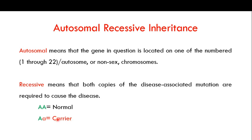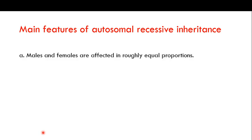Carriers are not called diseased; they are called carriers for that particular genetic disorder. The only time an individual will express an autosomal recessive disease is when both copies of the pair are in their abnormal form — small a and small a — meaning both members of the pair carry the disease-associated mutation.